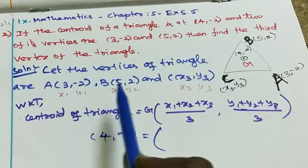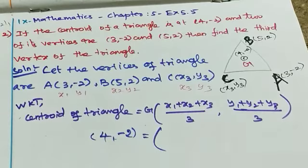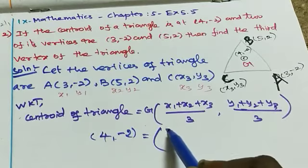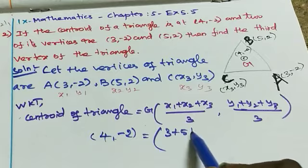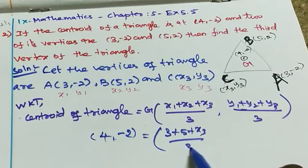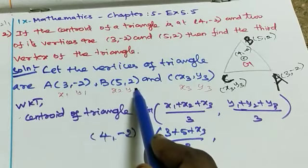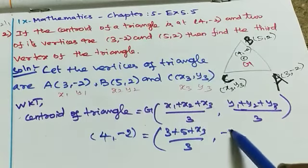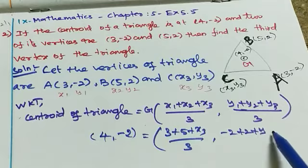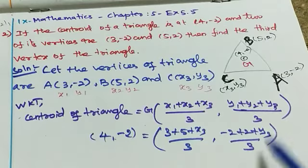So (4, -2) equals ((3 + 5 + x3)/3, (-2 + 2 + y3)/3). Substituting the points: x-coordinate gives us (3 + 5 + x3)/3, and y-coordinate gives us (-2 + 2 + y3)/3.